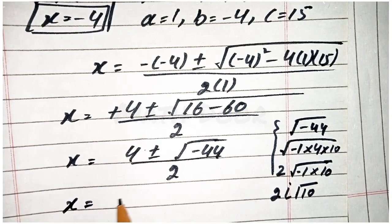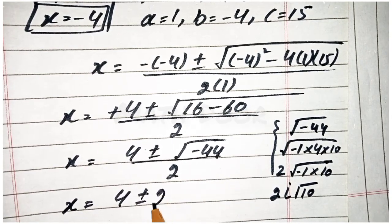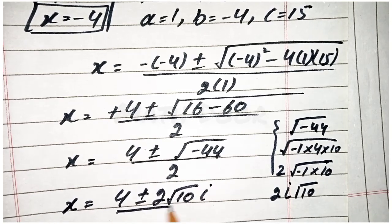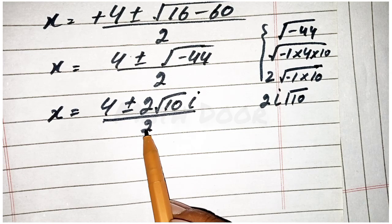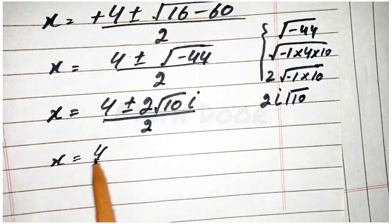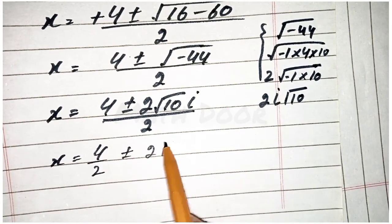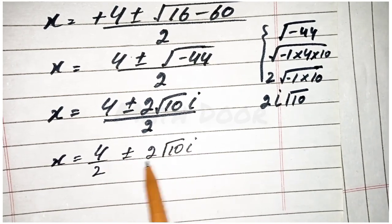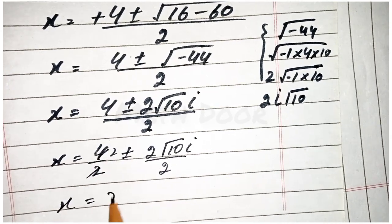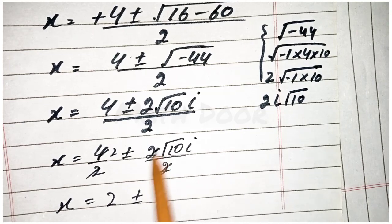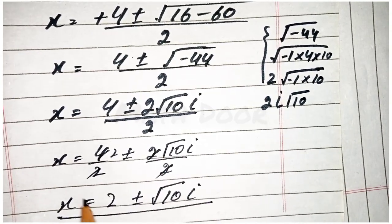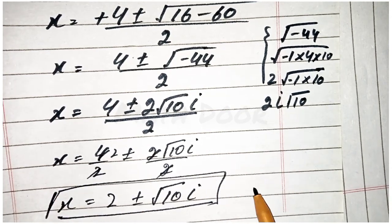x is equal to 4 plus minus 2 square root of 10 iota, over 2. Now dividing both terms by 2: 4 over 2 plus minus 2 square root of 10 iota over 2. This becomes x is equal to 2 plus minus square root of 10 iota. This is the second factor of x.